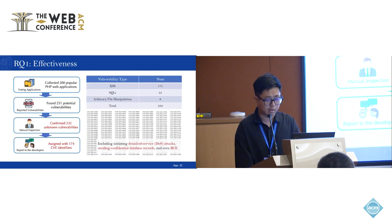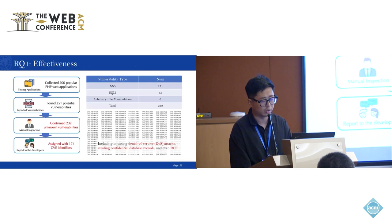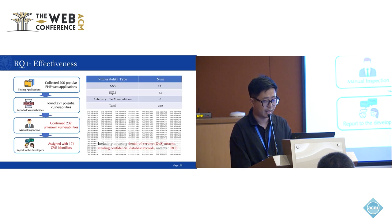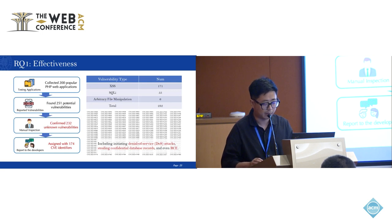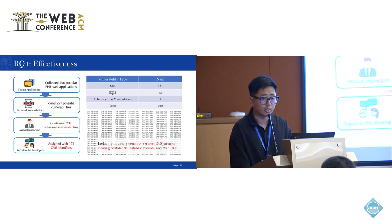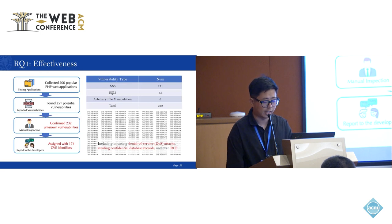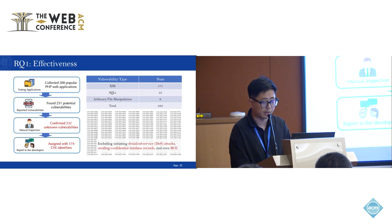To answer the first question, Rikerscan used the generated vulnerability signatures to detect recurring vulnerabilities in 200 popular PHP web applications. As a result, Rikerscan reported 251 potential vulnerabilities. After manual inspection, a total of 232 previously unknown vulnerabilities were confirmed, including XSS, SQL injection, and arbitrary file manipulation. These vulnerabilities could lead to DoS attacks, privacy leakage, and even remote code execution. After reporting to the developers, we were assigned 174 CVE identifiers.